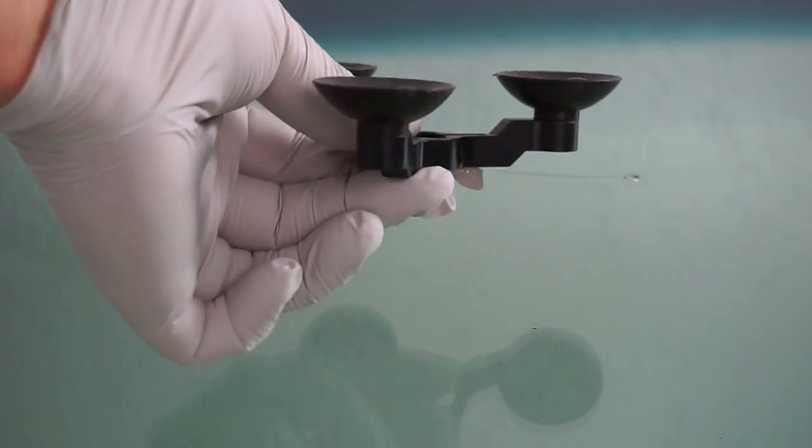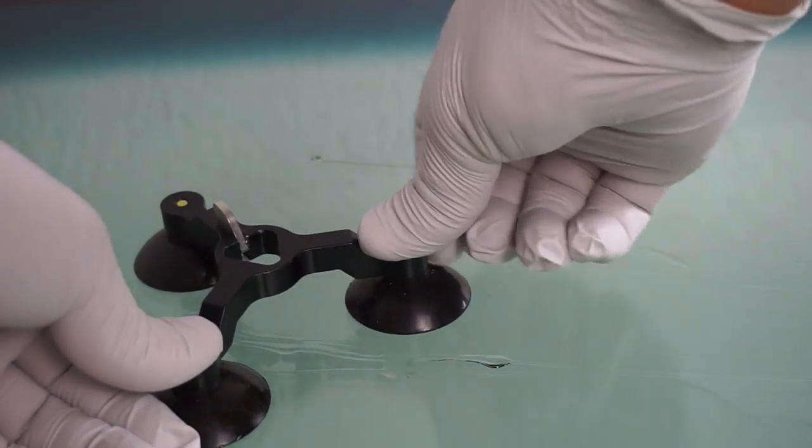Apply one drop of suction cup sealant to each of the suction cups of the tripod and then slide it back and forth in the area that it will have to move.